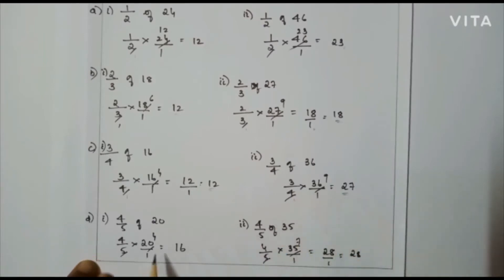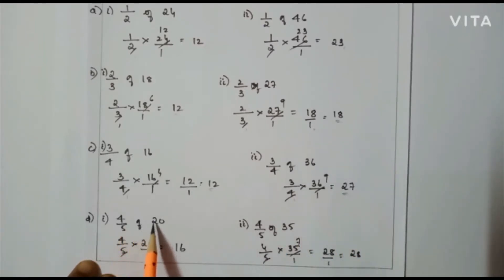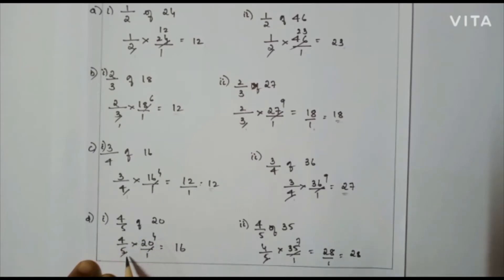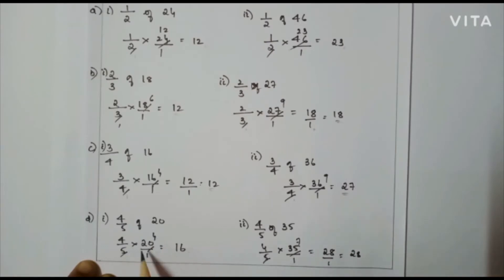The next problem: 4/5 of 20, that is 4/5 × 20/1. Here I can cancel: 5 divides 20 giving 1 and 4. So my answer will be 4 × 4 = 16.